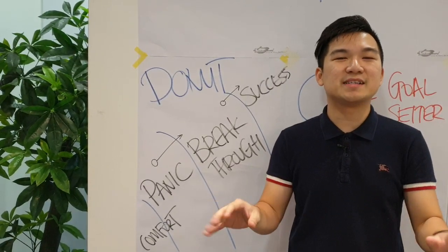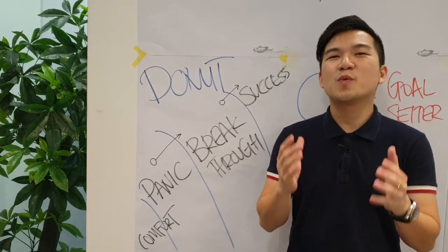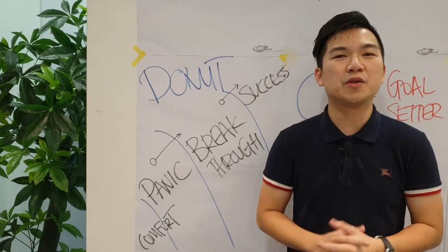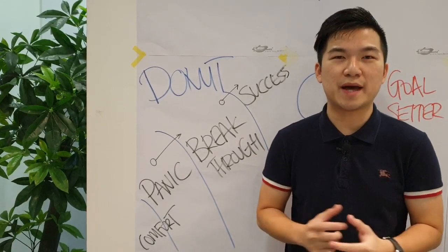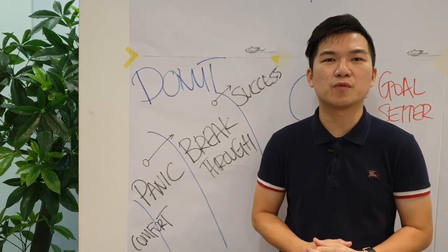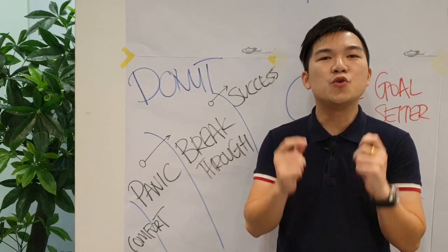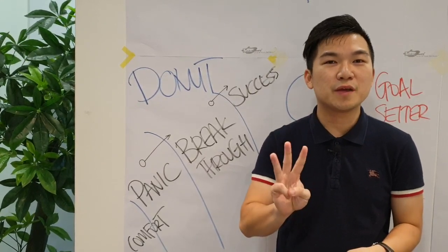Number two: consciousness. Be exactly sure on what is stopping you from achieving your absolute best. What are some limiting beliefs? What are your fears? What are some negative inner talks that you have in your mind that you must get rid of?